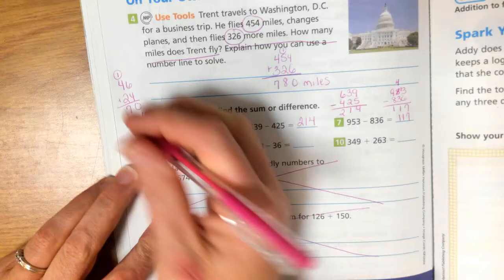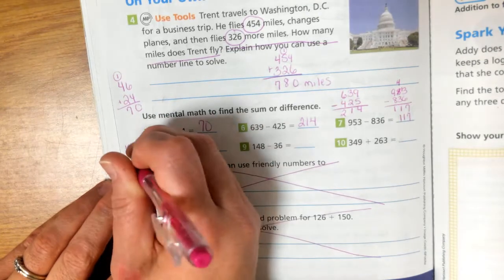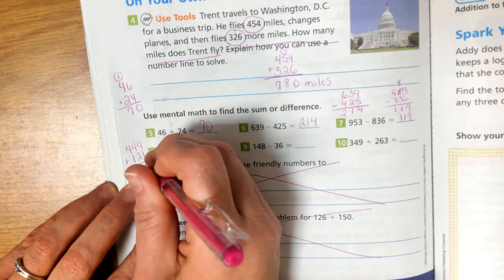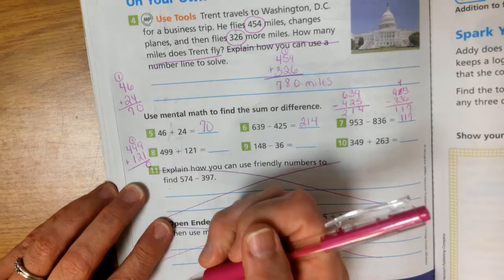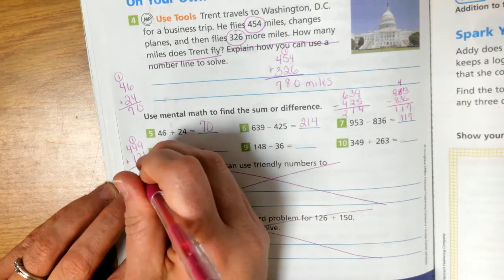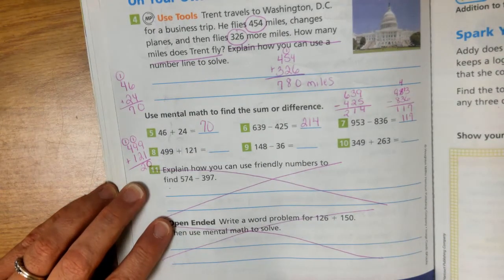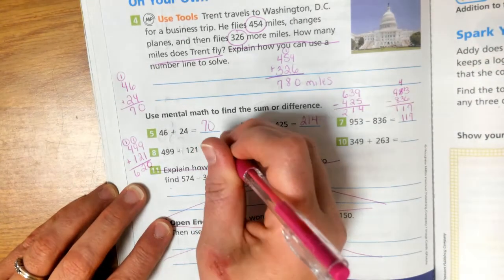Number 8. 499 plus 121. 9 plus 1 is 10. Regroup a 1. 9 plus 2 is 11 plus 1 is 12. Regroup a 1. 4 plus 1 is 5 plus 1 is 6. 620.